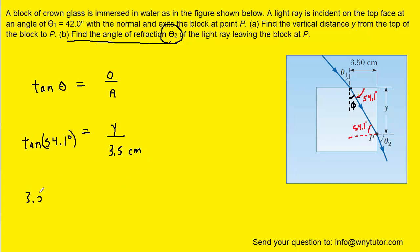We'll multiply both sides of the equation by 3.5 in order to isolate Y. And then we'll pick up our calculators and we'll type in 3.5 times the tangent of 54.1. And we get approximately 4.84 centimeters. So this would be the correct answer to part A of the question.